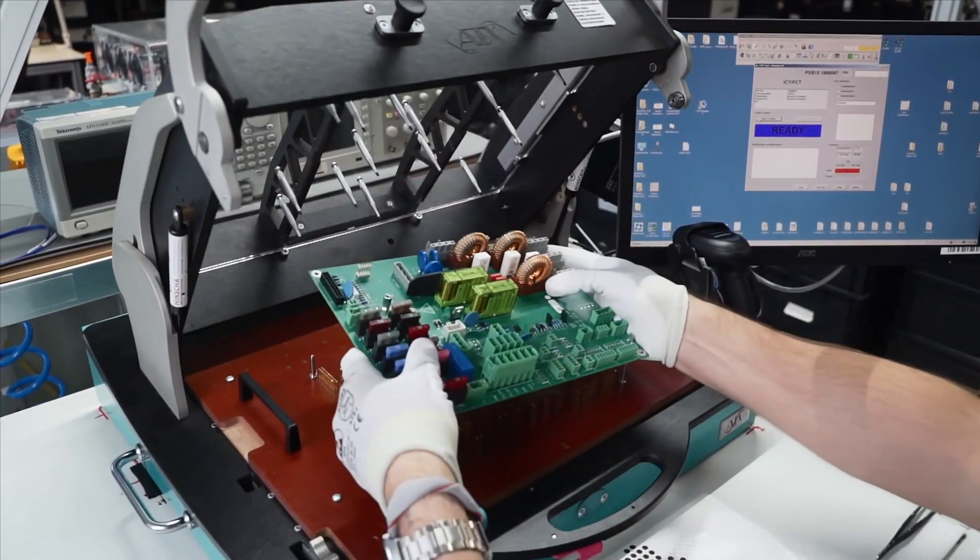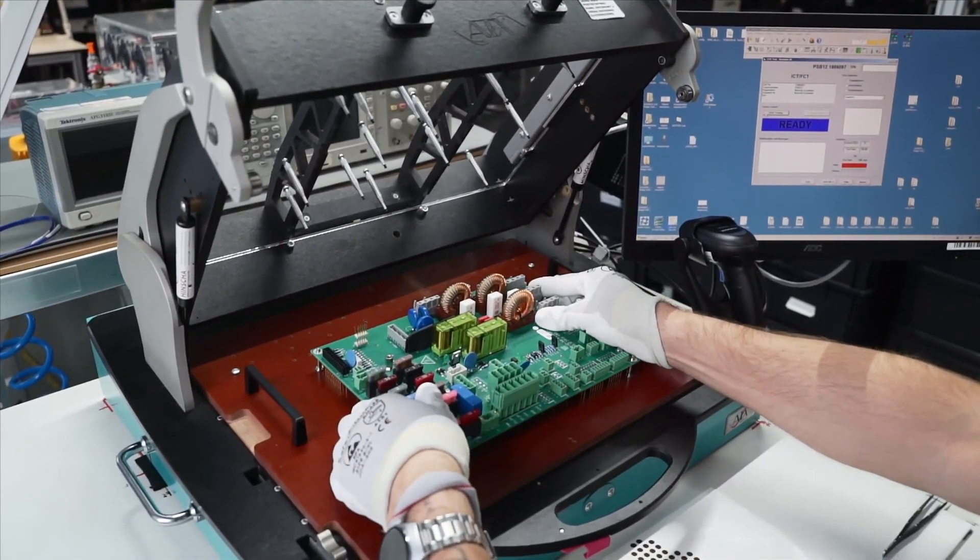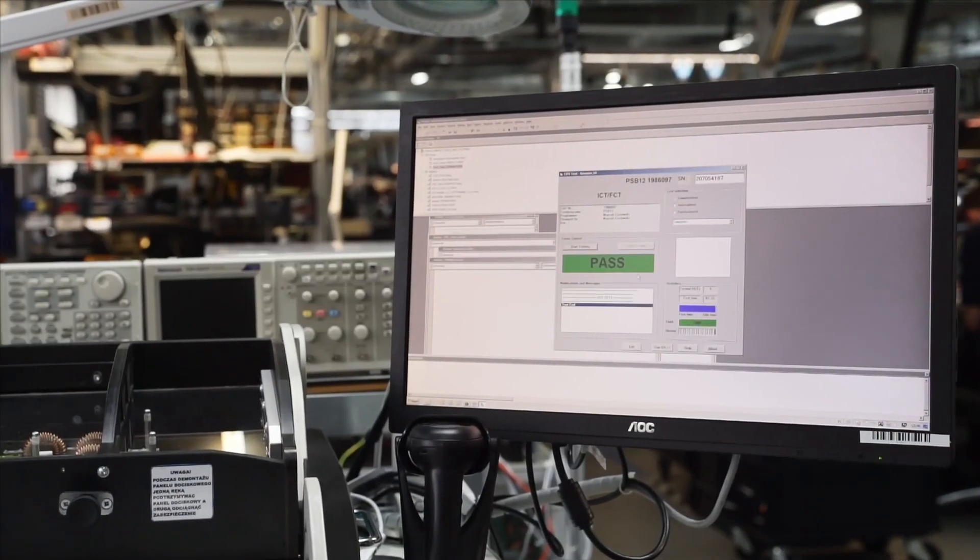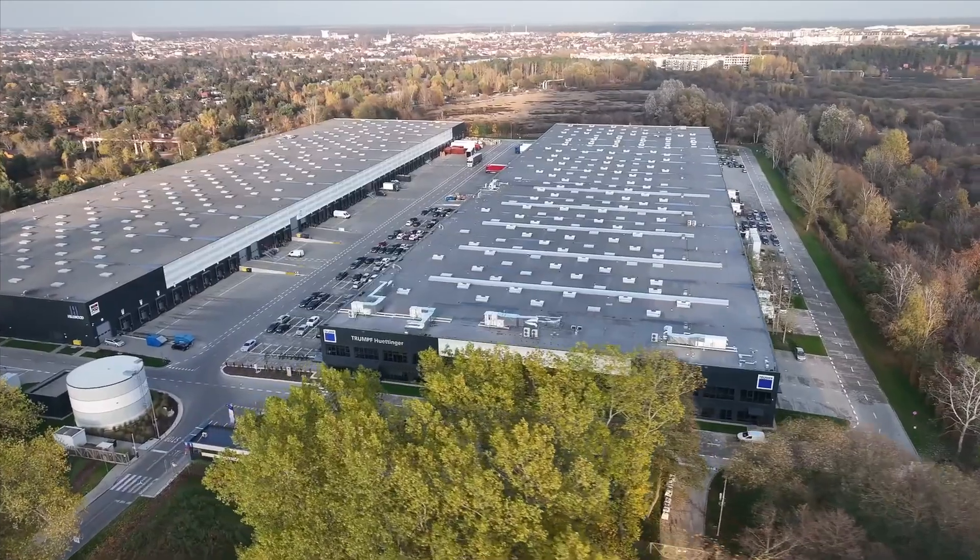After the assembly, the board is inserted into the inter-circuit tester, in which the electrical inspection takes place. Now we are changing our location once again.